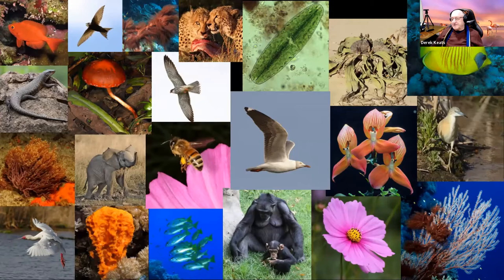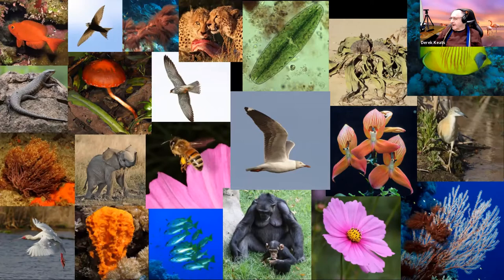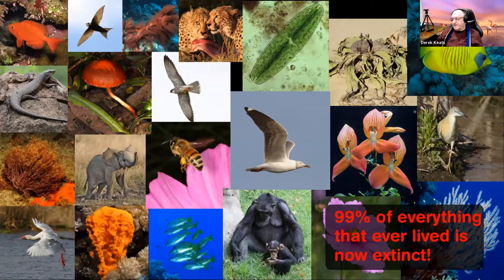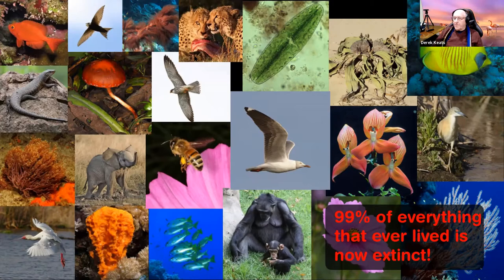Most people here have an interest in the natural world, probably not just birds. These photographs I've taken over the last couple of years illustrate different species and different groups — from algae at the top to the great apes at the bottom. When we look at the world, we see all this beautiful natural history, and we forget something really important: 99% of everything that ever lived is now extinct.